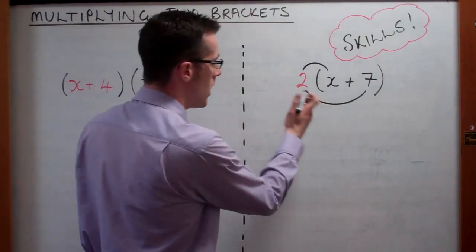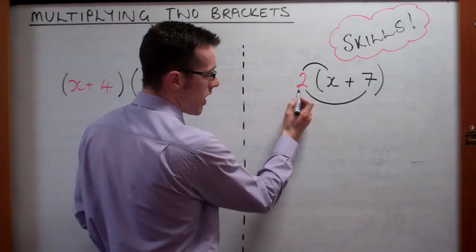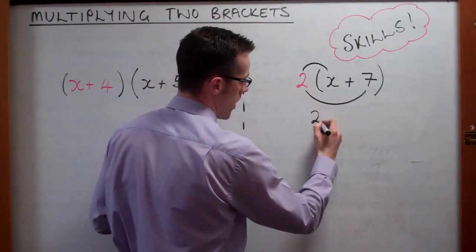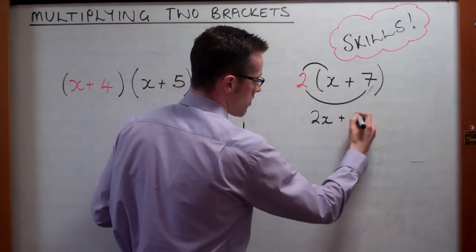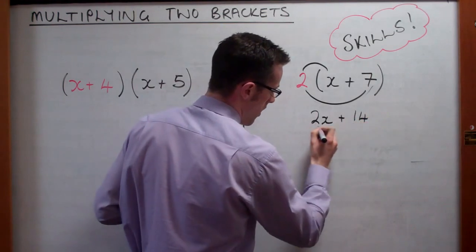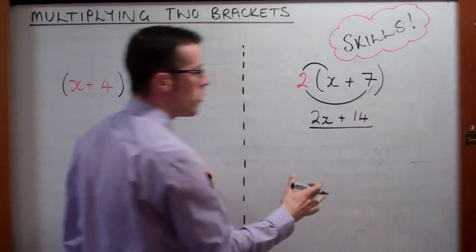Now, so what we're actually doing here as a skill is we're doing two times the x, which gives us two x, and then we're doing two times the seven, which gives us fourteen. And as we know, that's our answer.